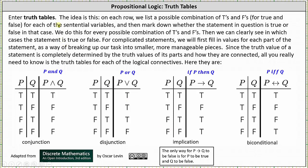This is where truth tables enter. On each row we list a possible combination of T's and F's for true and false for each of the sentential variables, and then mark down whether the statement in question is true or false in that case. We do this for every possible combination of T's and F's. Then we can clearly see in which cases the statement is true or false. For complicated statements, we will first fill in the values for each part of the statement as a way of breaking up our task into smaller, more manageable pieces.